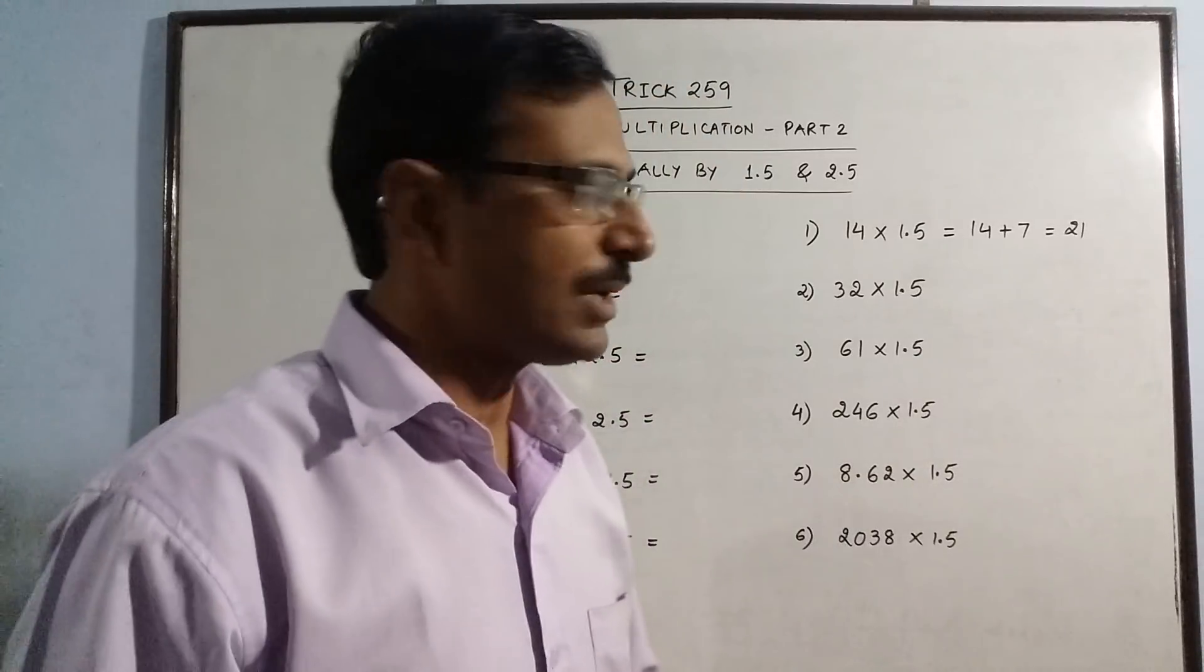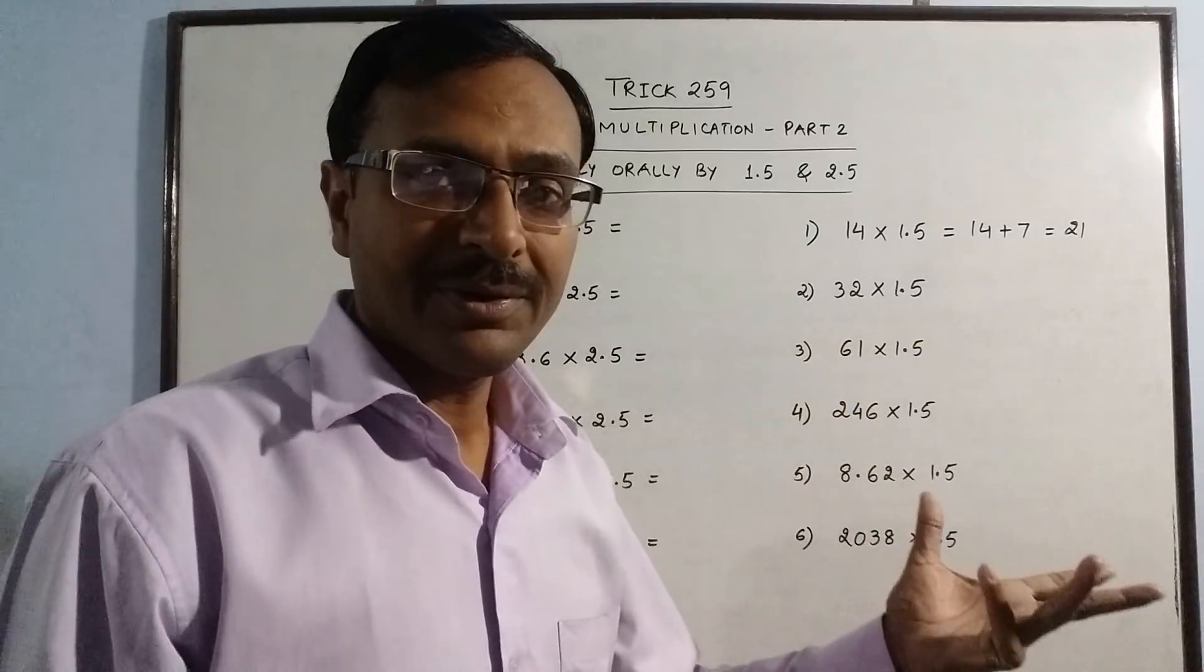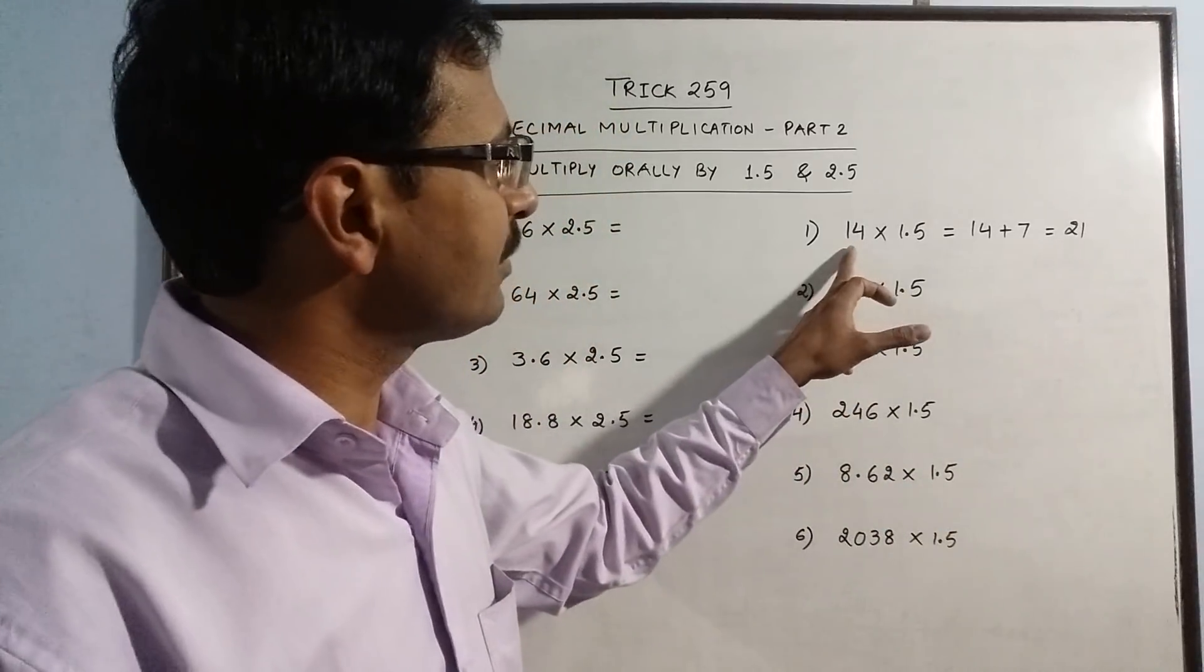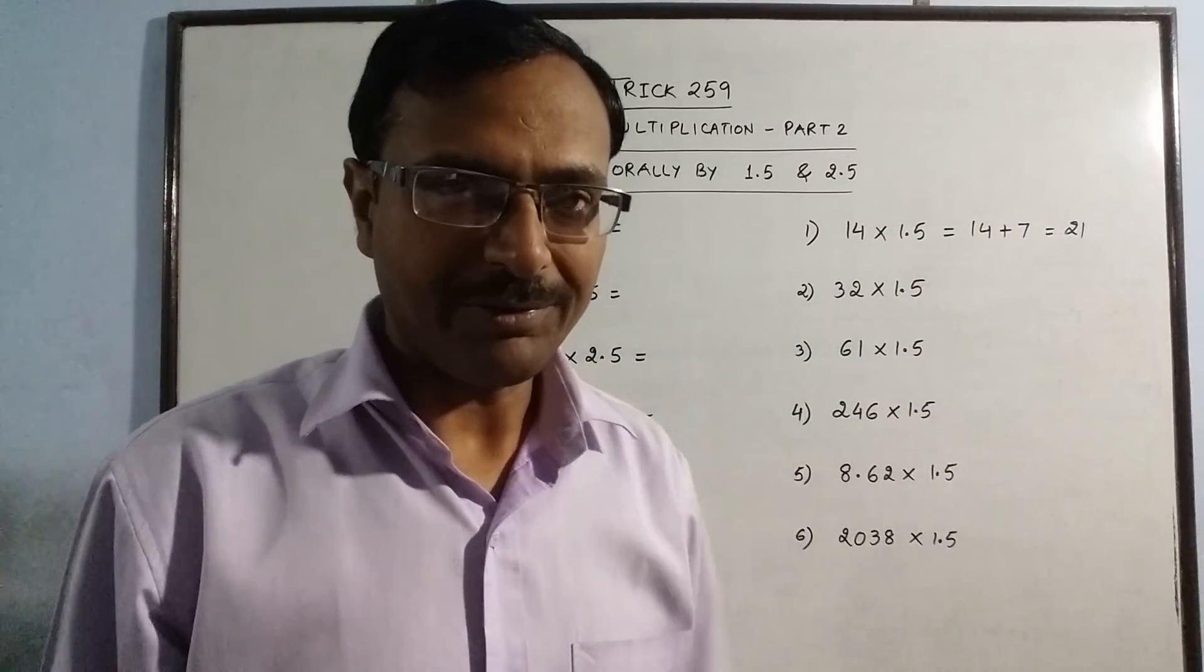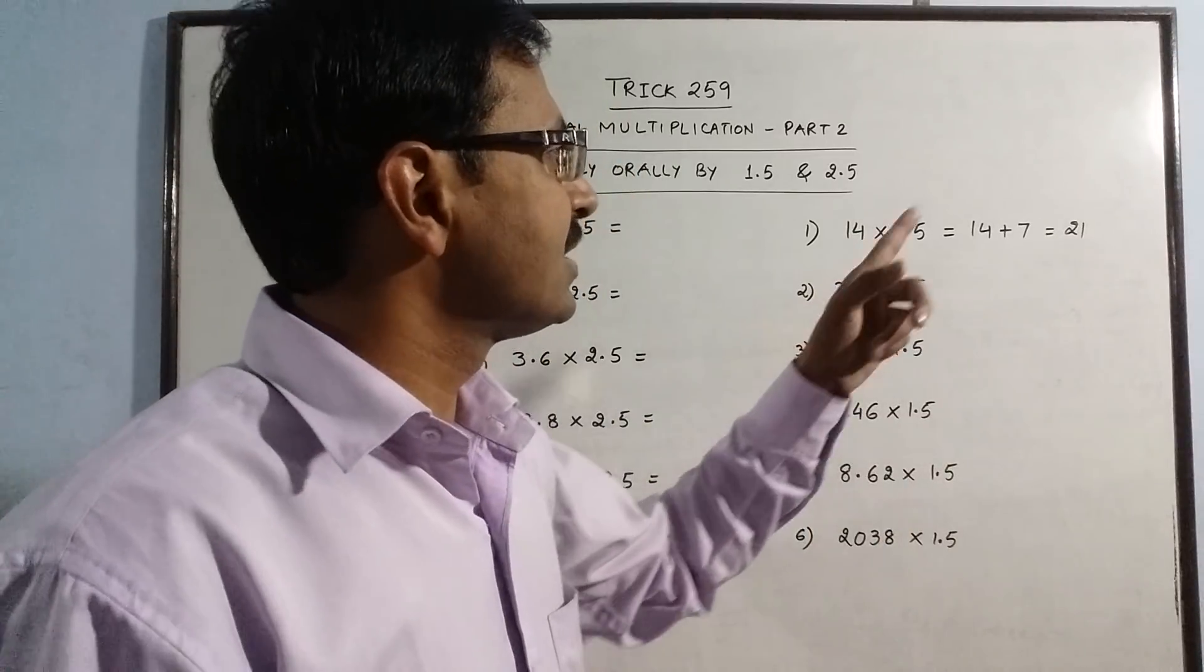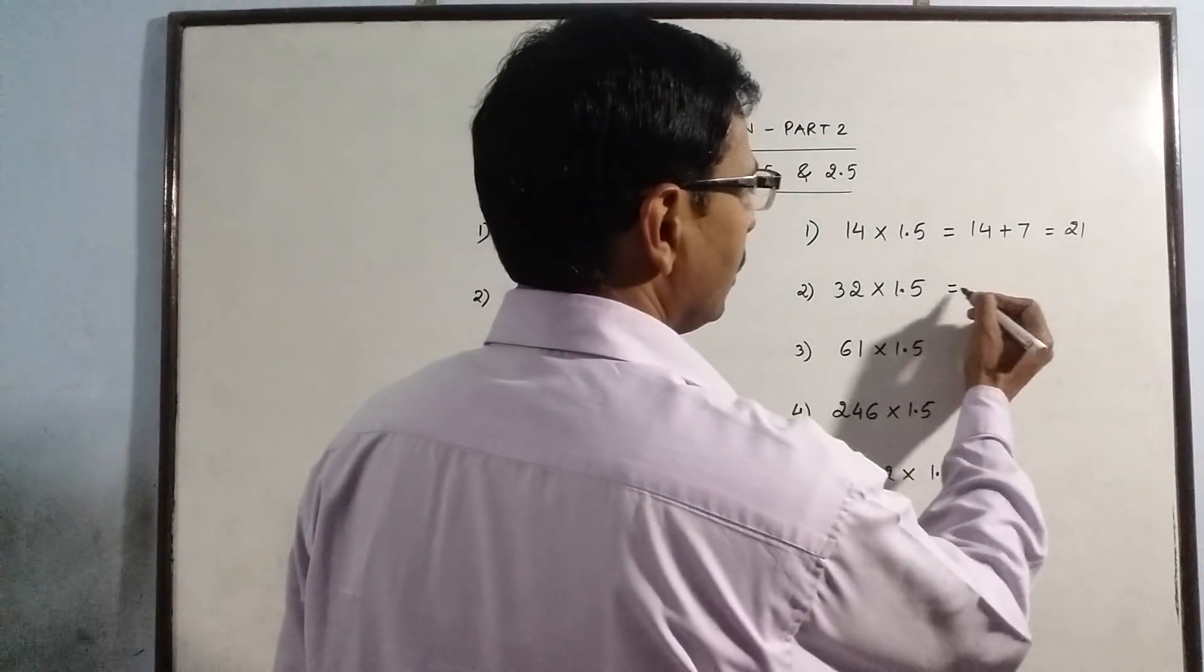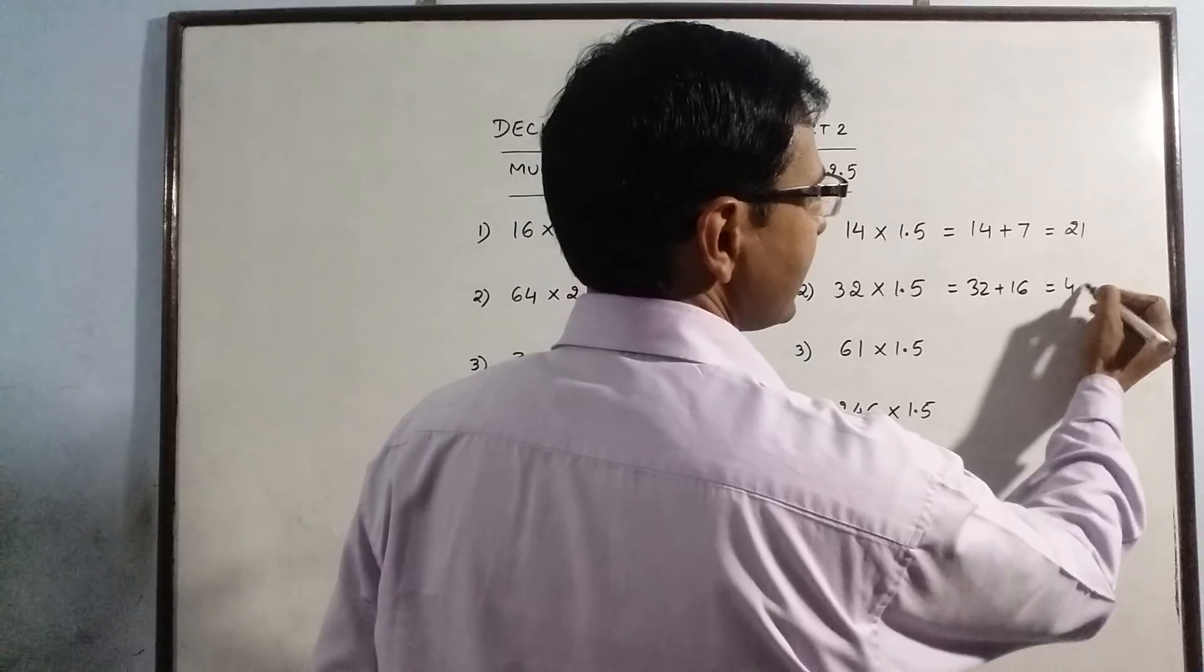You don't need to write 1.5 anywhere in rough work. Just look at this number and you will be finding the answer. See, 14 times 1.5: half of 14 is 7, so 14 plus 7 is 21, your answer is 21. Again, 32: what is half of 32? 16. So your answer is 48.